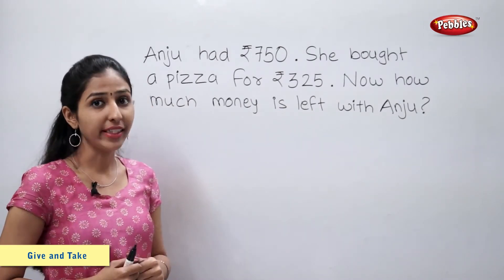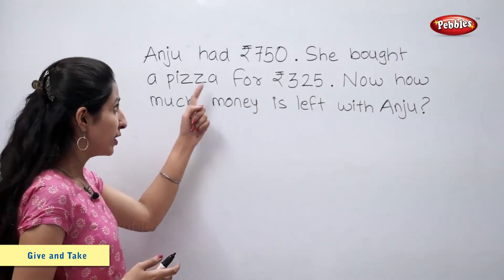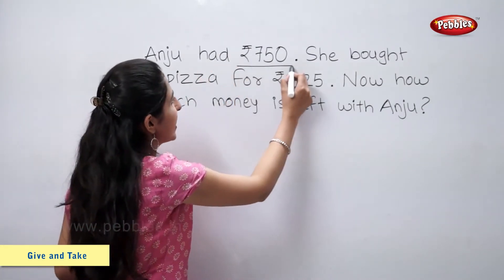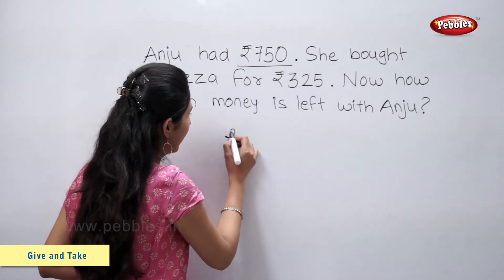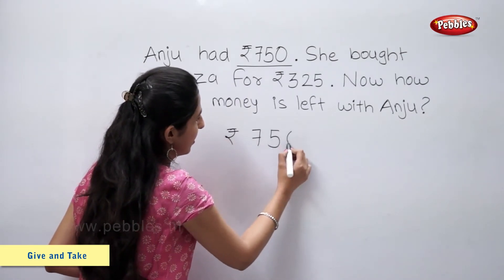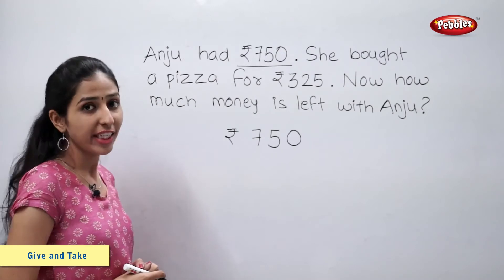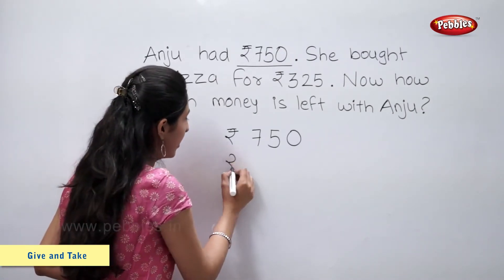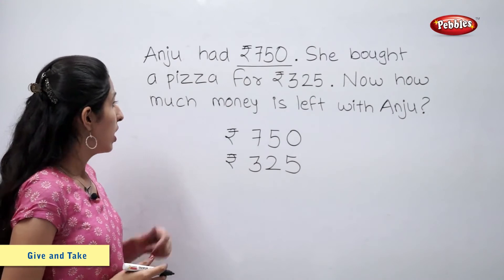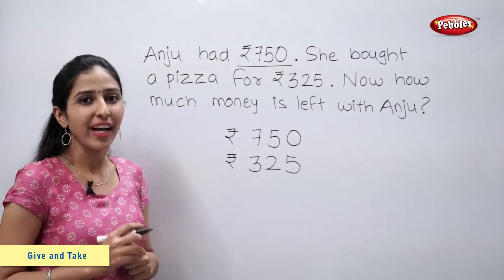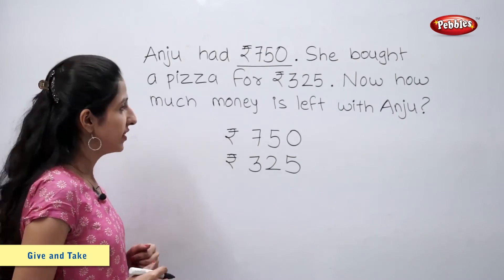Students, we have to find the amount left with Anju. So, let us subtract. Anju had rupees 750 — let's write rupees 750. She bought a pizza for rupees 325 — let's write rupees 325. Now, how much money is left with Anju? For finding this, we will have to subtract rupees 325 from rupees 750.